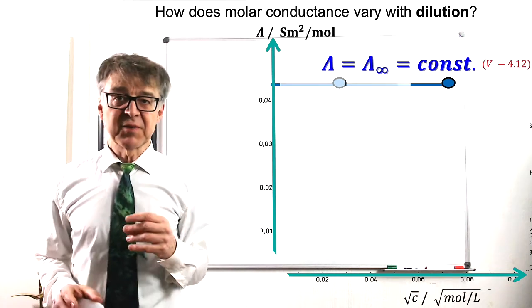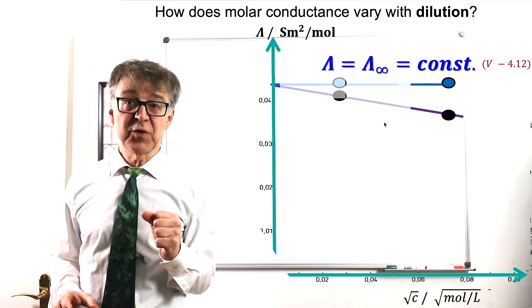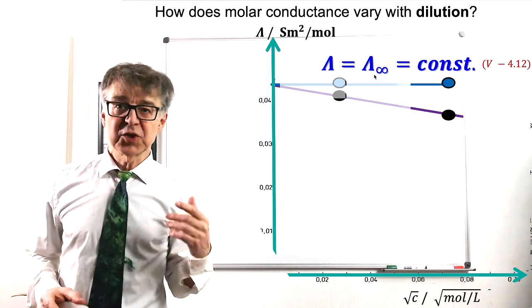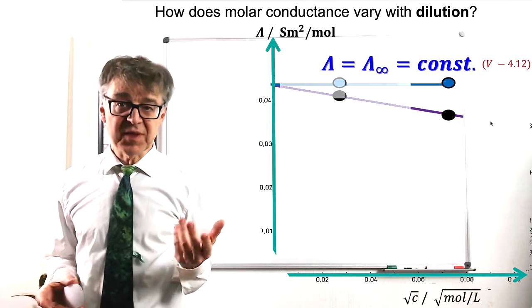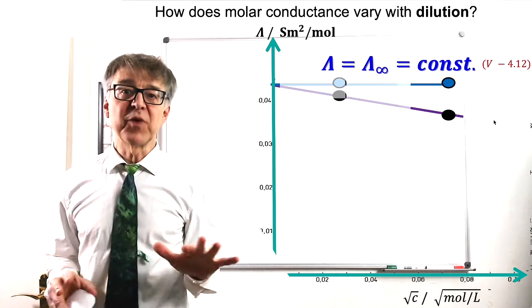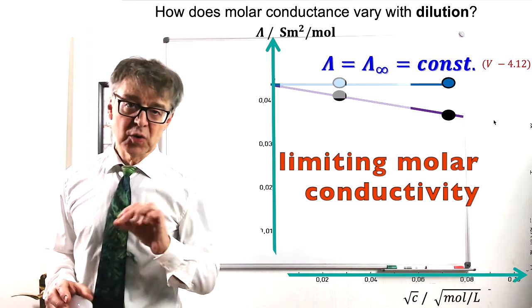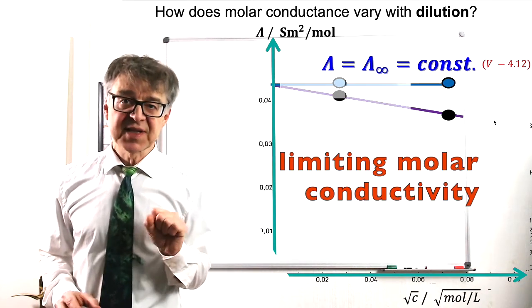In real electrolytes, the molar conductivity increases on dilution because the mobility of the ions increases. At infinite dilution, i.e., concentration 0, the ions can move freely. This is quantified by the limiting molar conductivity, lambda sub infinite.